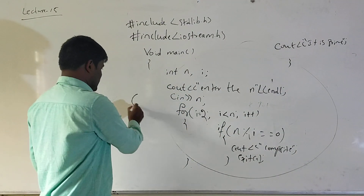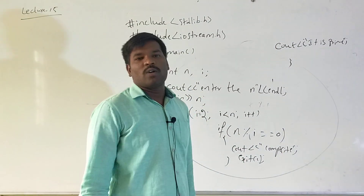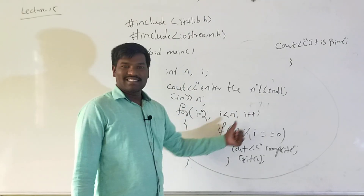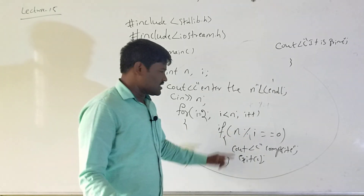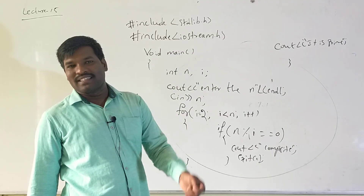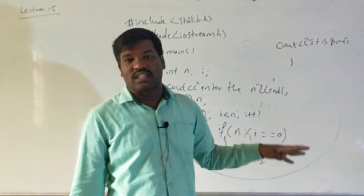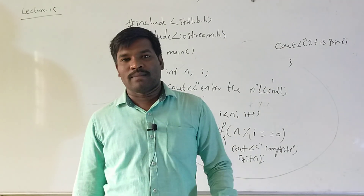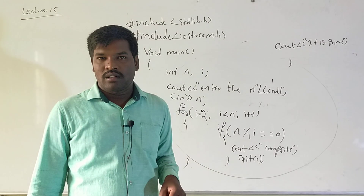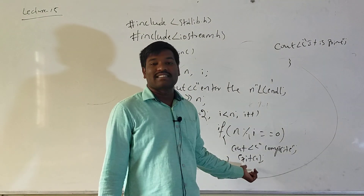Let me trace through with n equal to 6, which is a composite number. i is equal to 2, 2 is less than 6 — condition is true. 6 mod 2 equals 0, and 0 equals 0, so the condition is true — it is composite. Once it prints the result as composite, the next step is exit(0), which stops the entire program execution. We stop because 6 is already divisible by 2, so there is no need to check for 3 or any further values.